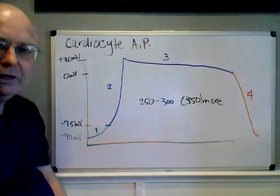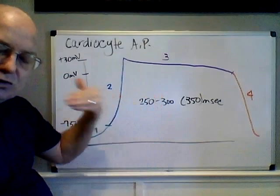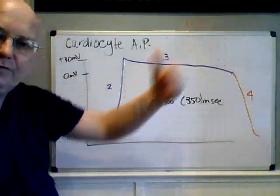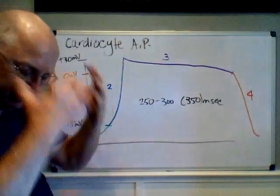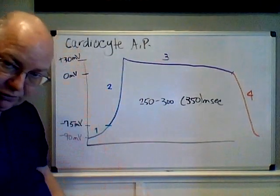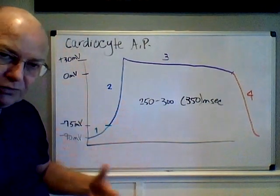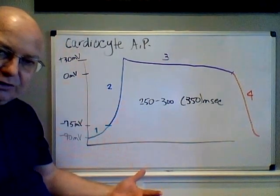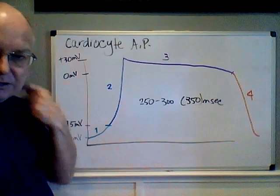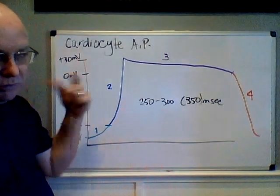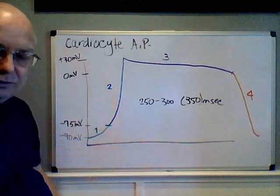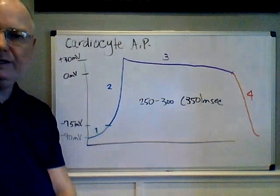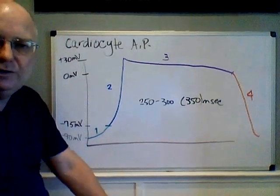The heart needs that sustained squeeze — that delivery of massive amounts of oxygen and glucose to all of the tissues of the body. As blood flows around, it delivers oxygen and glucose and picks up carbon dioxide. That's why we covered blood flow to the heart, though that's a whole other topic we've already gone through.